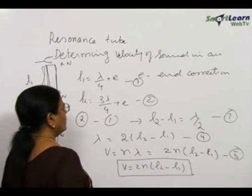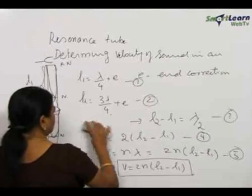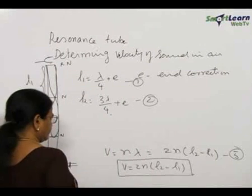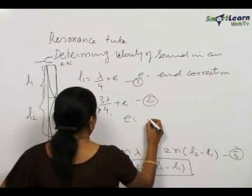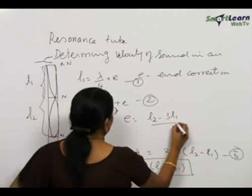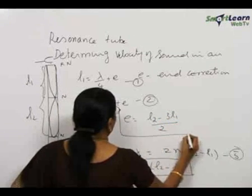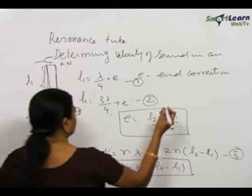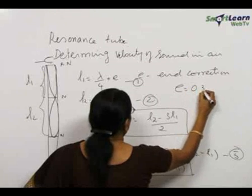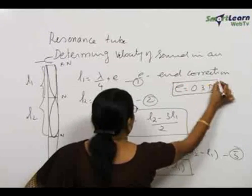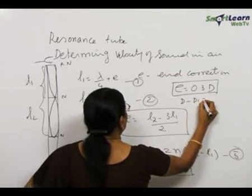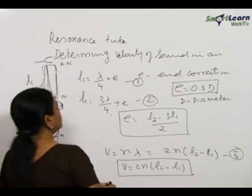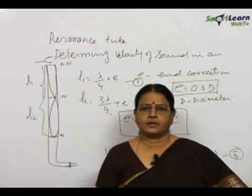We can also determine the end correction from equations 1 and 2: E = L1 − (L2 − L1)/2. The end correction is related to the diameter of the tube as E = 0.3d, where d is the diameter of the tube. This is the experimental determination of velocity of sound using the resonance column.